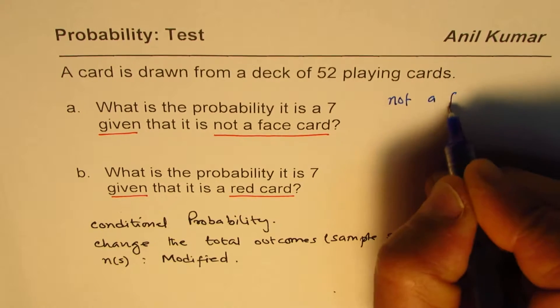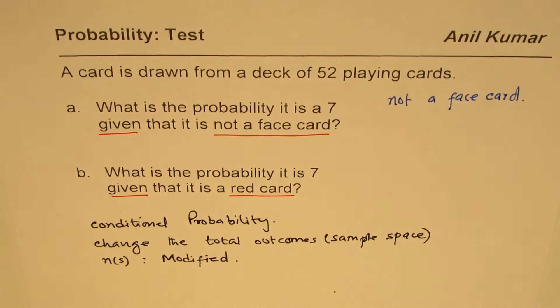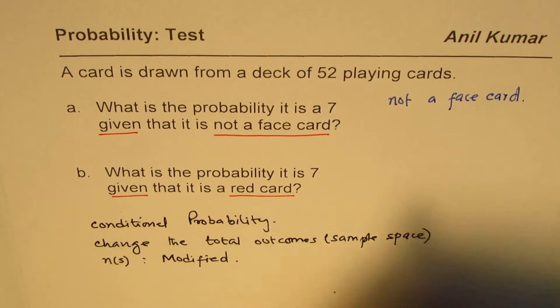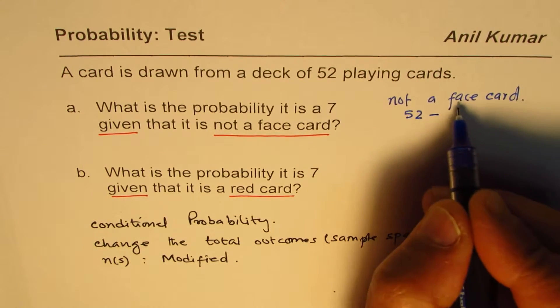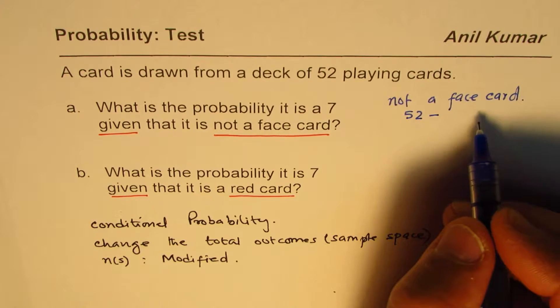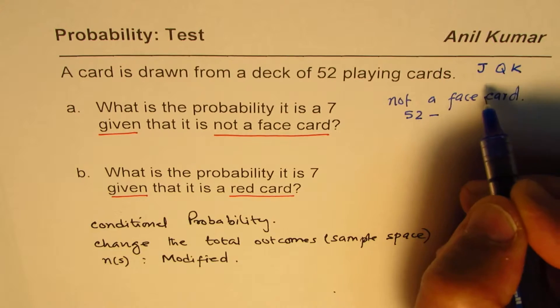When we say not a face card, it means what? Now there are 12 face cards, right? So out of 52 we have to take away the face cards.